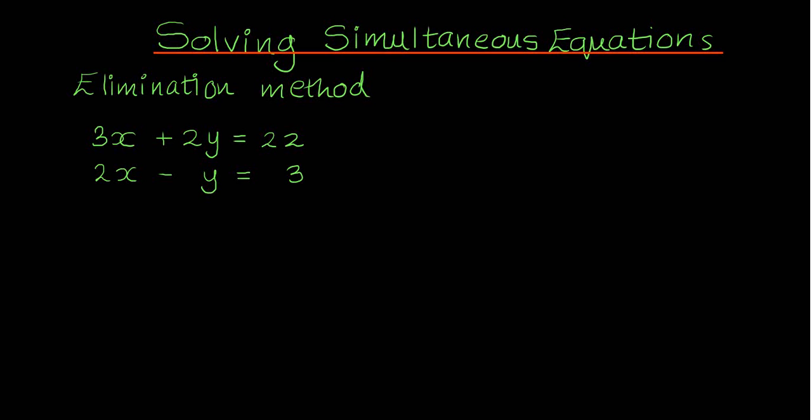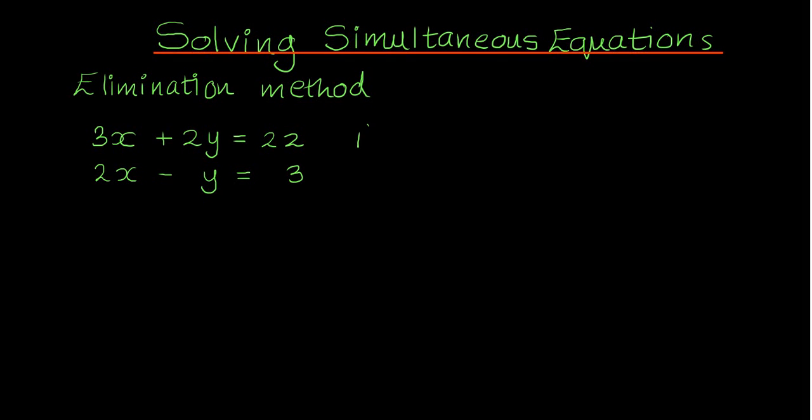We'll look at three examples today. My first example: I've got two equations — 3x plus 2y equals 22, and 2x minus y equals 3. Neither of them have the same absolute values; the coefficients of x are different and the coefficients of y are different. I'm going to call this equation 1 and this equation 2. I'm going to try to make the absolute values of the y coefficients the same, so I'm going to multiply the second equation by 2 and leave the first equation as it is.